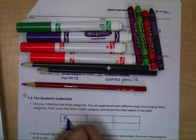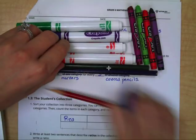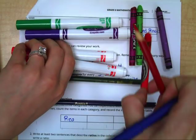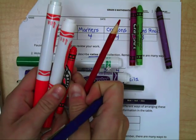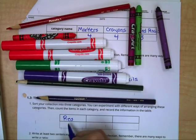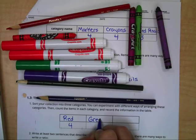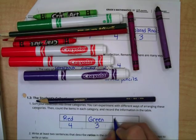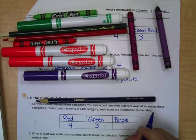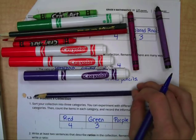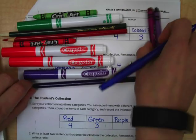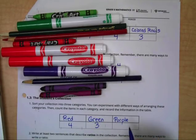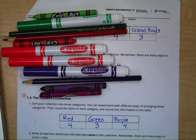I bet a lot of you are thinking that we could sort them by color. So let's do that. We have some red objects. So we have four red objects. We have some green. One, two, three green. And we have purple. I know it might be kind of hard to see on the video, but these four are purple.